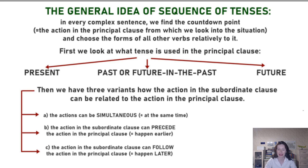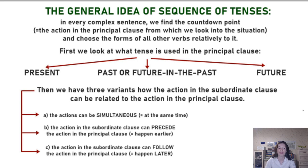The free choices will be based on whether the subordinate clause action is simultaneous — happening at the same time, for example: 'I know what you see right now'; or preceding — it happened earlier, for example: 'I know what you have seen' or 'I know what you saw yesterday.'